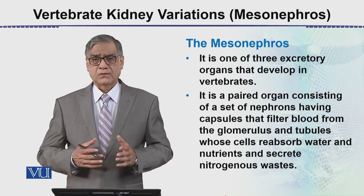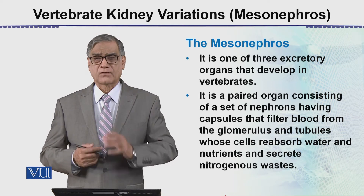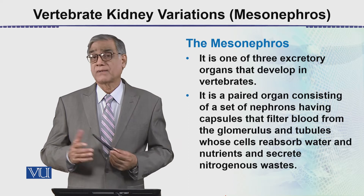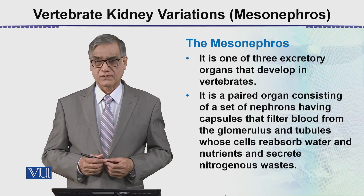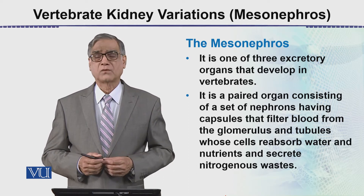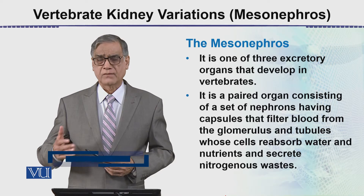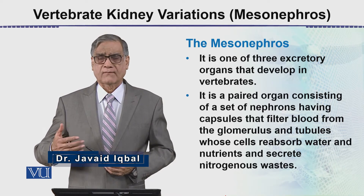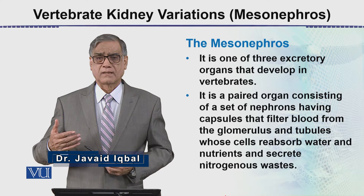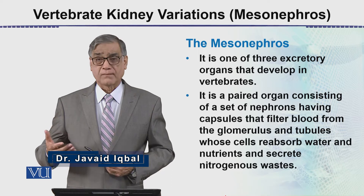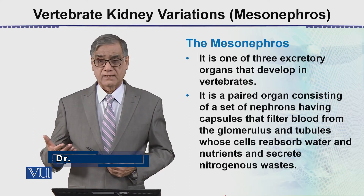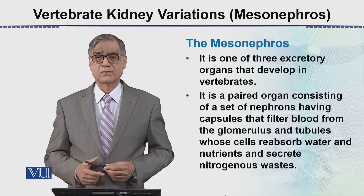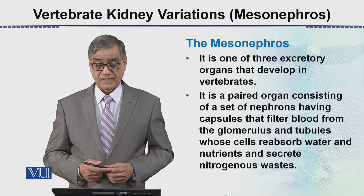جیسے ہم پہلے ذکر کر چکے کہ جیسے جیسے vertebrate کی development ہوتی ہے، pronephros, meso اور metanephros تینوں قسم کی kidneys one after the other with the passage of time during the developmental process بنتی ہیں۔ لیکن advanced reptiles، birds اور mammals کے اندر ultimate kidney جو ہے وہ metanephros ہی ہے۔